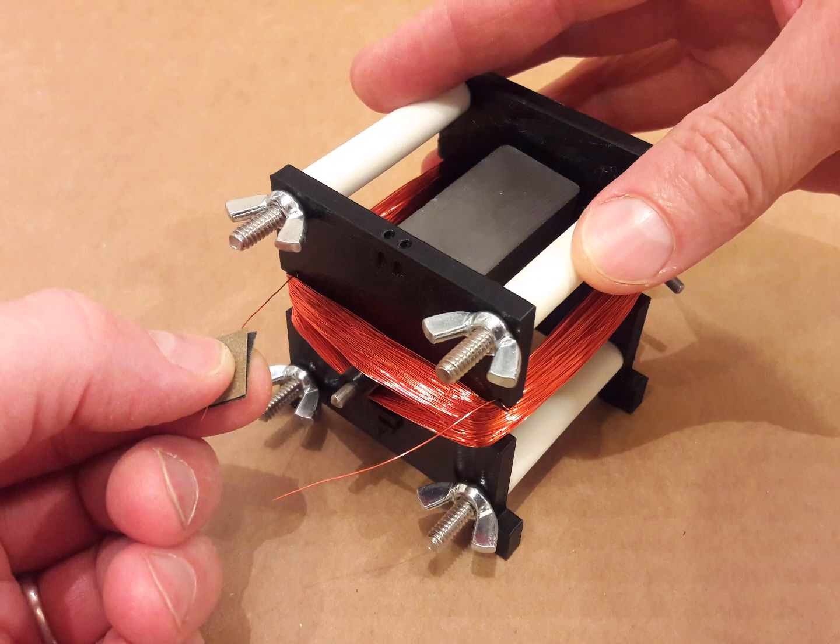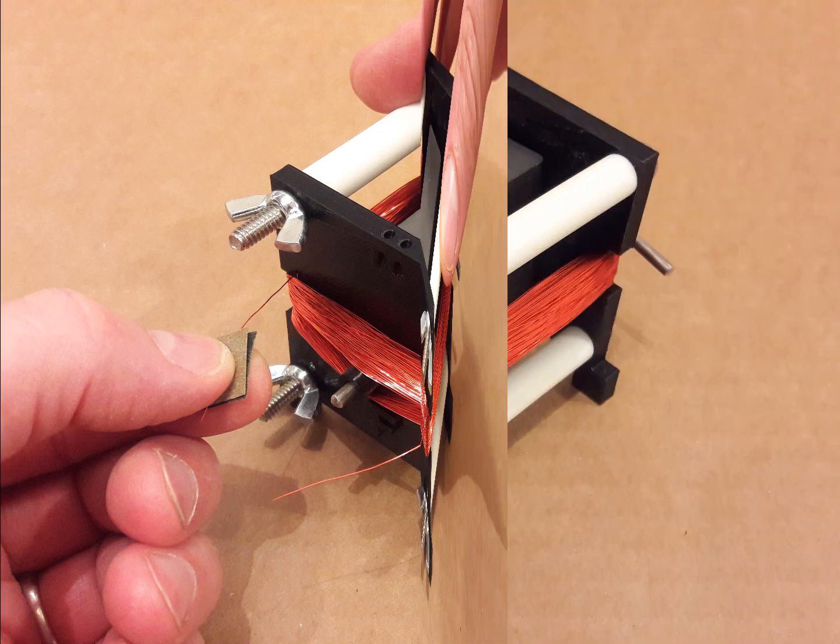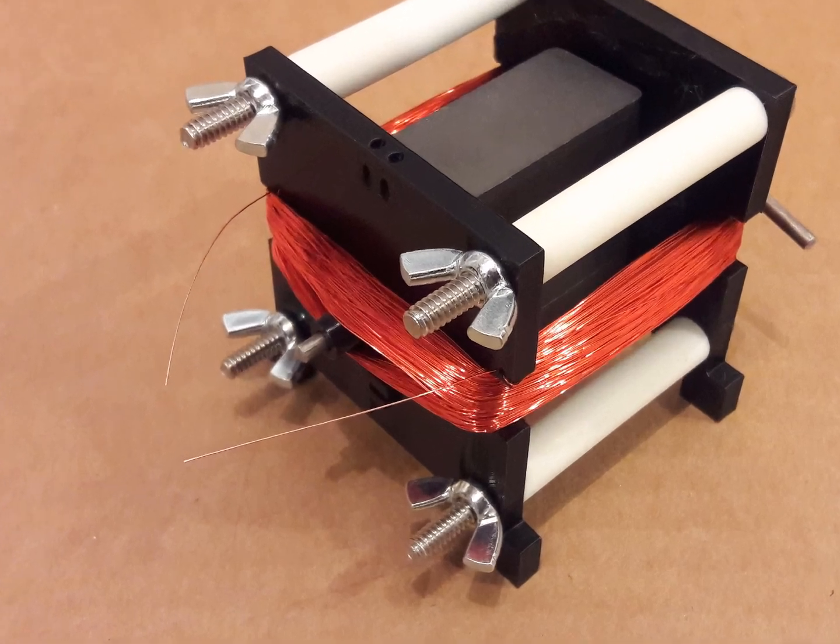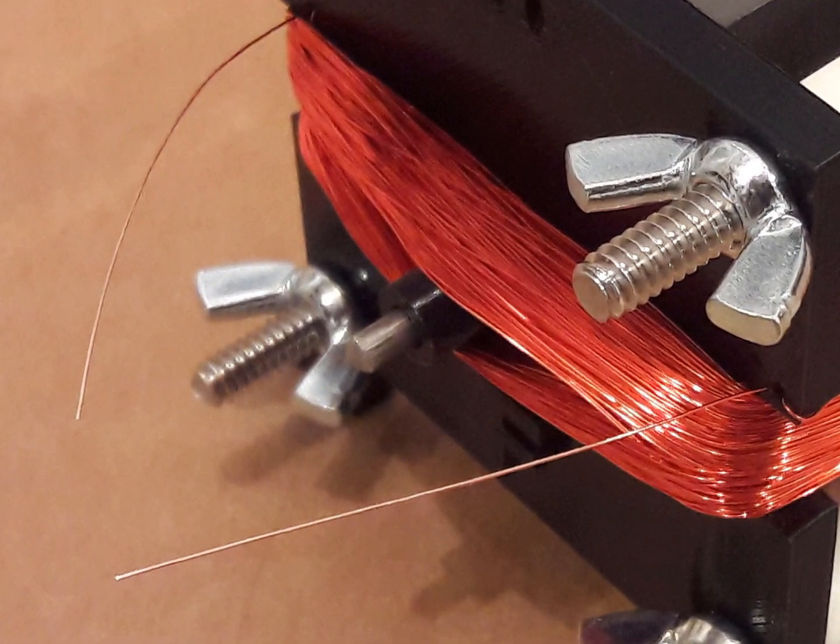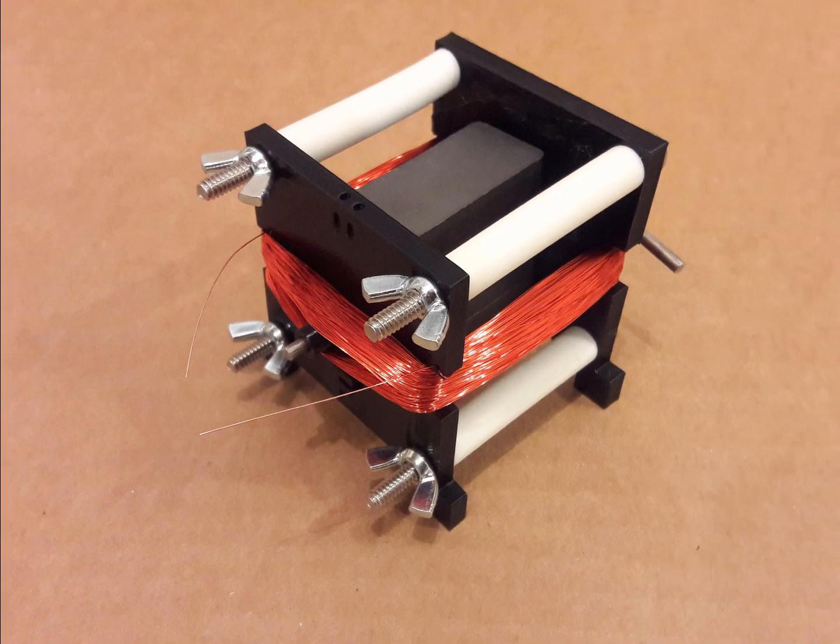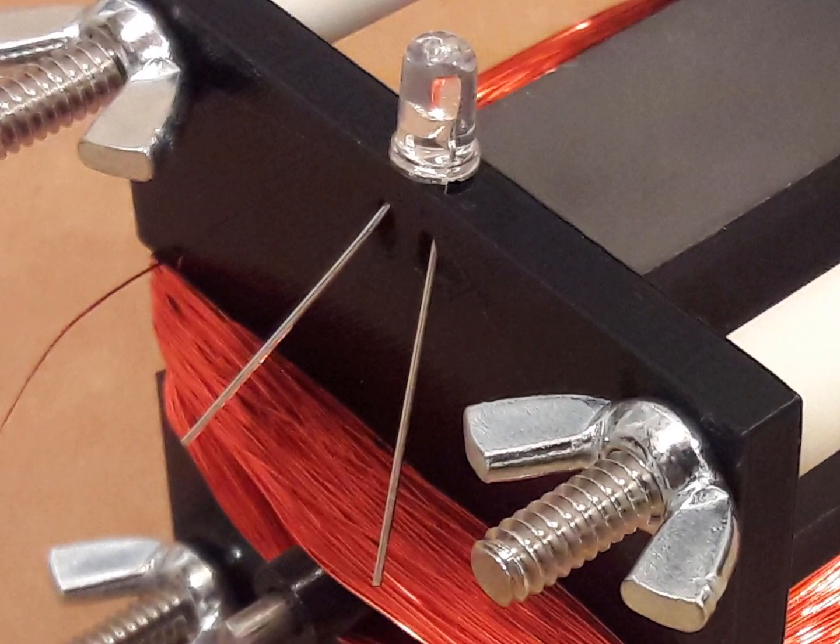Fold the sandpaper in half with the rough side inside the fold. Gently drag each wire through the sandpaper, thereby stripping the enamel off the magnet wire and exposing the bright copper.